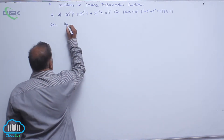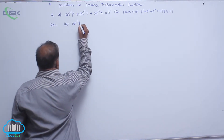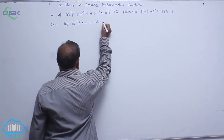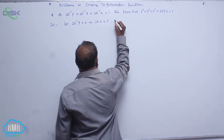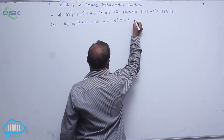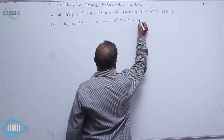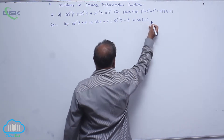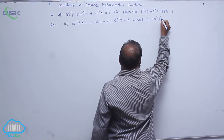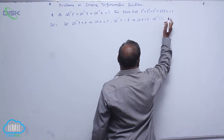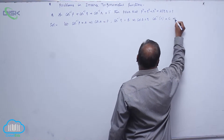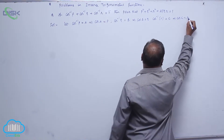Let cos inverse P equal A, which implies cos A equals P. Let cos inverse Q equal B, which implies cos B equals Q. Let cos inverse R equal C, which implies cos C equals R.